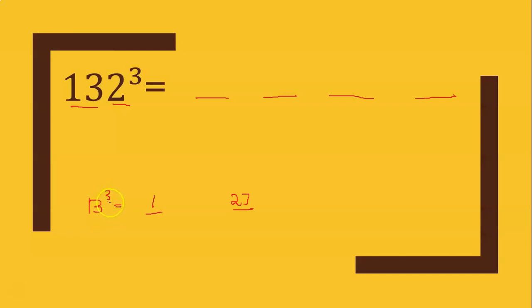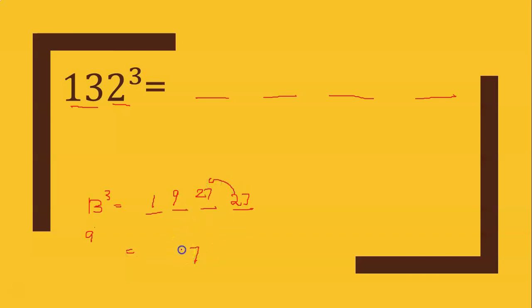We multiply: 1 × 3 × 3 = 9. When you multiply the first digit, the first part is 9, the second part is 27. Working through the additions: 2,197. Next, 2 cubed is 8.